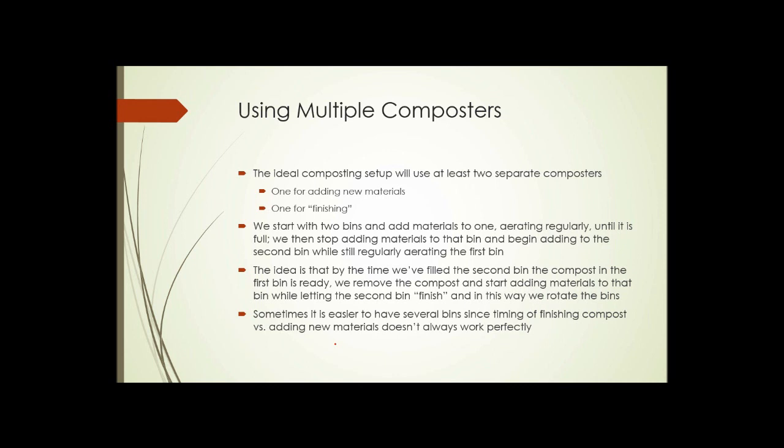Using multiple composters. As I mentioned before, you really need two separate containers. One for adding new materials and one for finishing. You start with two bins, add materials to one, aerating it regularly until it's full. At that point, you stop adding new materials to the bin and begin adding materials to the second bin, but you still keep aerating the first bin on a regular basis. The idea being that by the time we have filled the second bin up, the first bin will be finished. And we can remove that compost, start using that first bin again to add new material, and let the second bin cook.